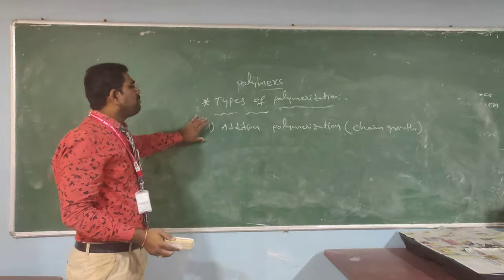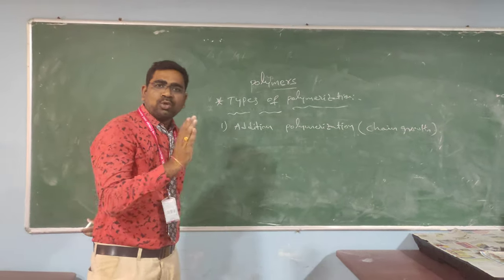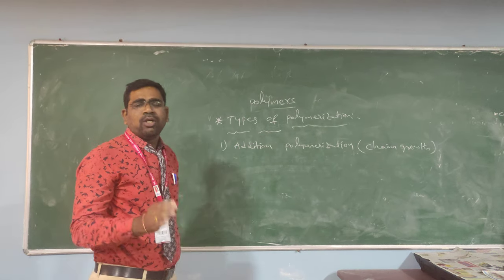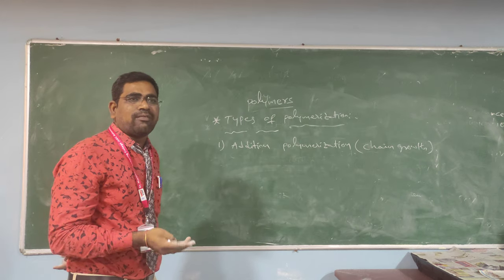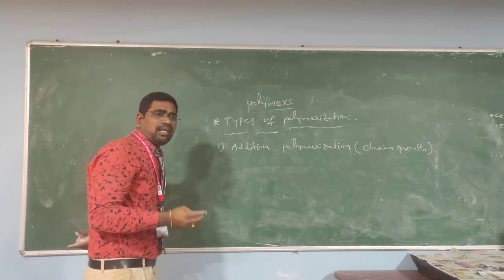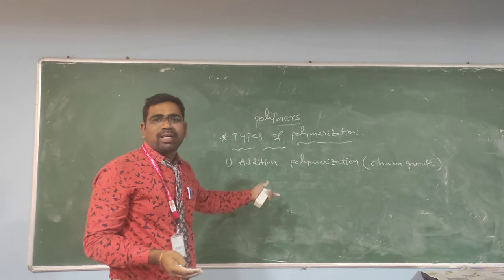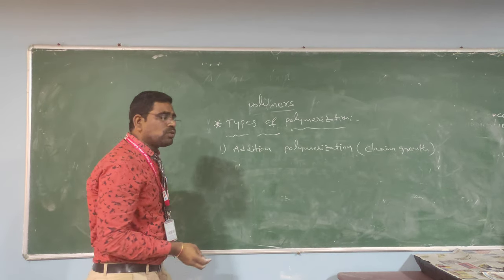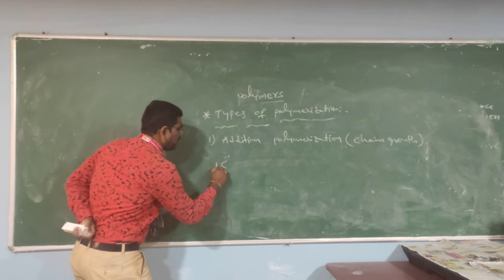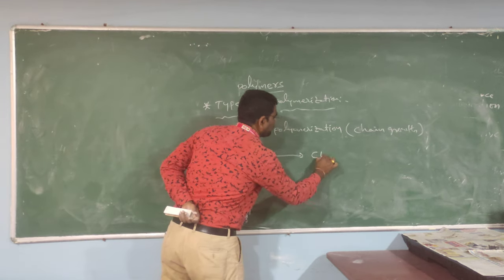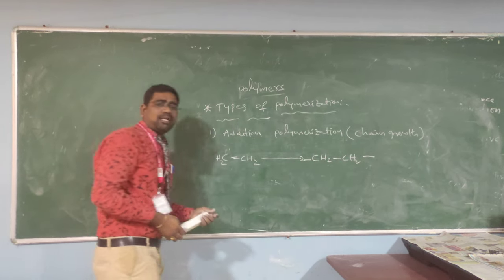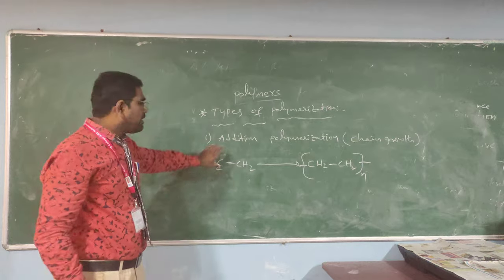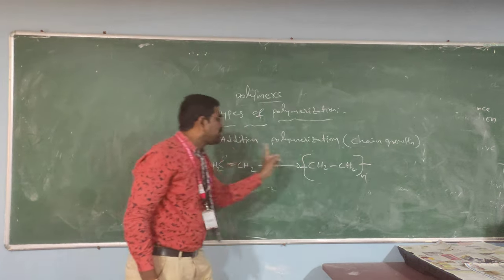Now we will discuss addition polymerization. What is the definition? Similar to polymerization — two or more monomers combined to form a polymer — but specifically, addition polymerization is when two or more monomers combine to form a polymer without elimination. Without elimination is called addition polymerization. Examples: polyethylene, polyvinyl chloride, polystyrene. For instance, ethylene — CH2 double bond CH2 — gives CH2 single bond CH2 (polymer). No byproduct is produced, so without elimination takes place.